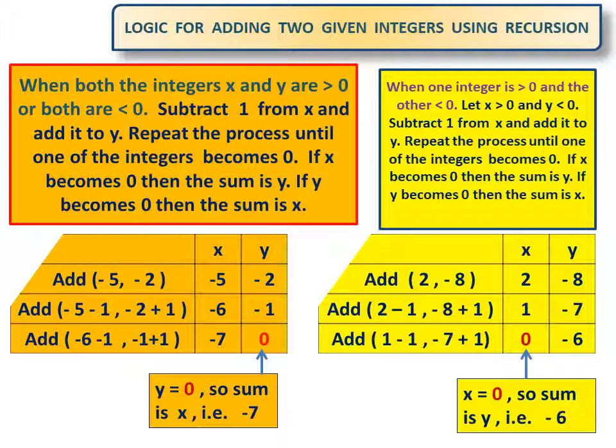Example: let x be 2 and y be -8. Subtracting 1 from x, it becomes 2 - 1 = 1. Adding 1 to y, it becomes -8 + 1 = -7. Again, subtracting 1 from x, it becomes 1 - 1 = 0. Adding 1 to y, it becomes -7 + 1 = -6. x is 0, so sum is y, that is -6.